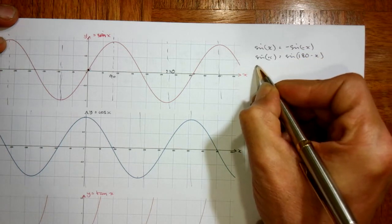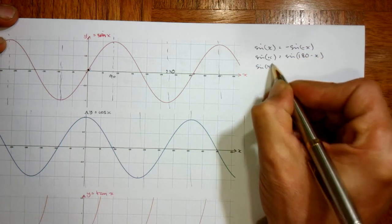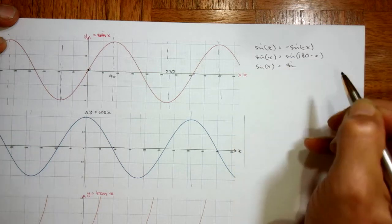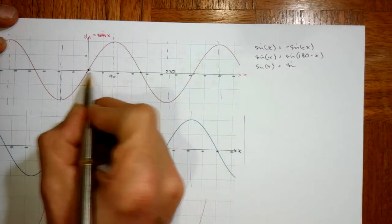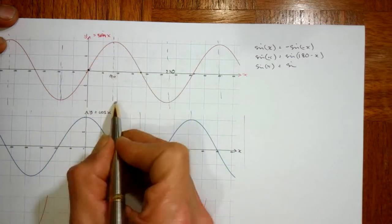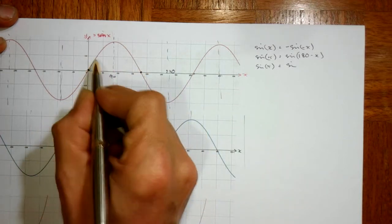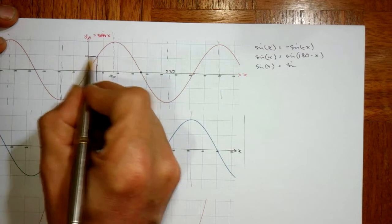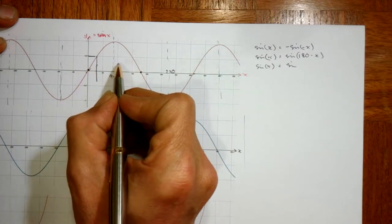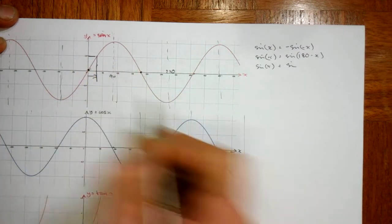So we've got symmetry there. Here's our 180, because it means, look, if we've got an angle of 30, the y value is at half, then we've got a distance of 30 degrees.